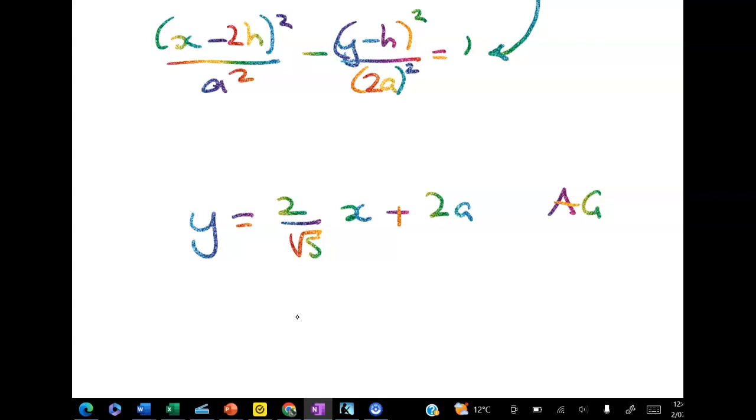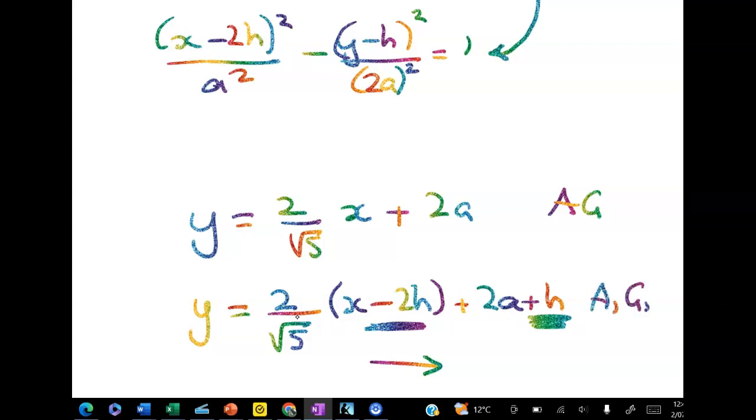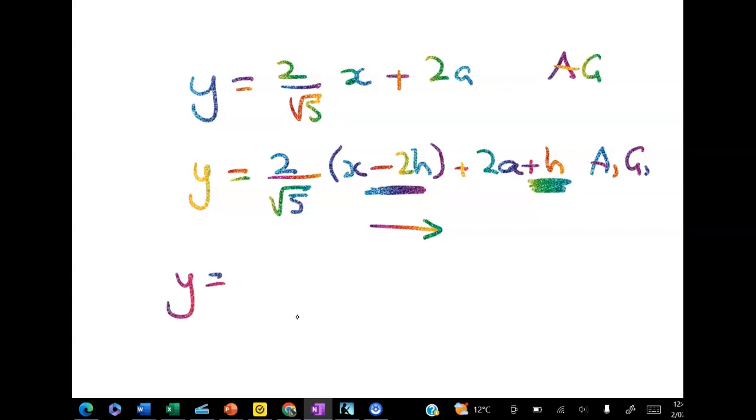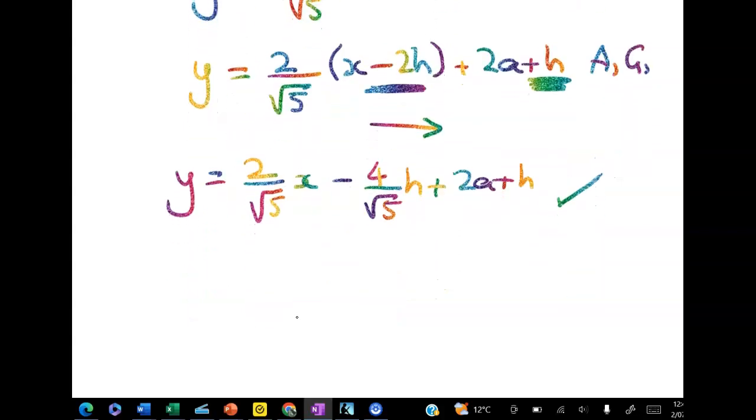So we have y equals 2 on root 5x plus 2a. That's ag. And now we're going to have y is equal to 2 on root 5 times x minus 2h plus 2a plus h. This is my vertical shift up one unit and this is my horizontal shift across 2h units. So this is the line through a1 g1. And it would be nice to clean that up. So we'll get y is equal to 2 on root 5x minus 4 on root 5h plus 2a plus h. If you don't like that you could times through by your root 5s and you could get root 5y is equal to 2x minus 4h plus 2 root 5a plus root 5h. Either of those is fine.